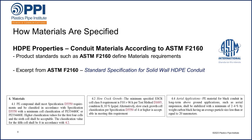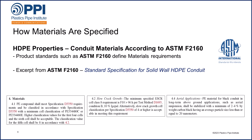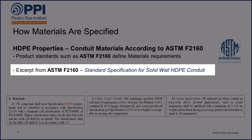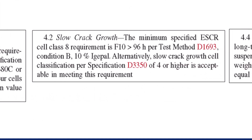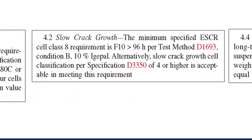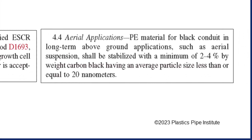Now a lot of these properties are specified in product standards. The primary product standard for HDPE Conduit products is ASTM F2160, standard specification for solid wall HDPE Conduit. Below are a few screenshots from ASTM F2160 showing the material section. In section 4.1, it is defined exactly what the minimum cell class shall be. The slow crack growth resistance is also defined in section 4.2. And for aerial applications of Conduit where Conduit is attached to above-ground poles, section 4.4 has additional requirements for carbon black to ensure long-term resistance to sunlight in these non-buried applications.